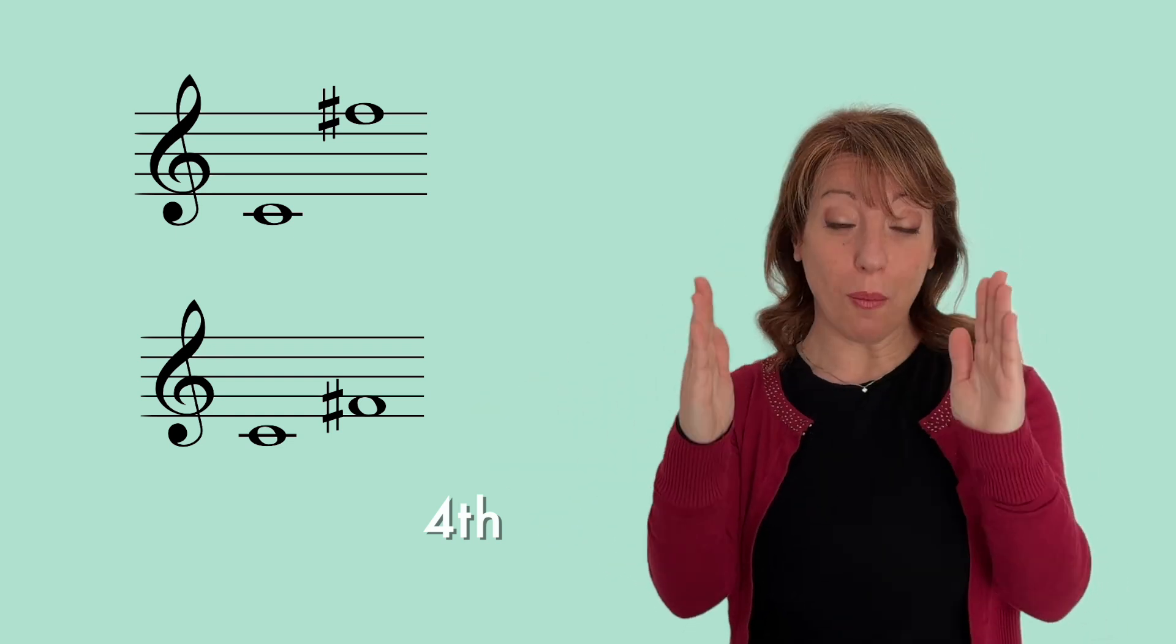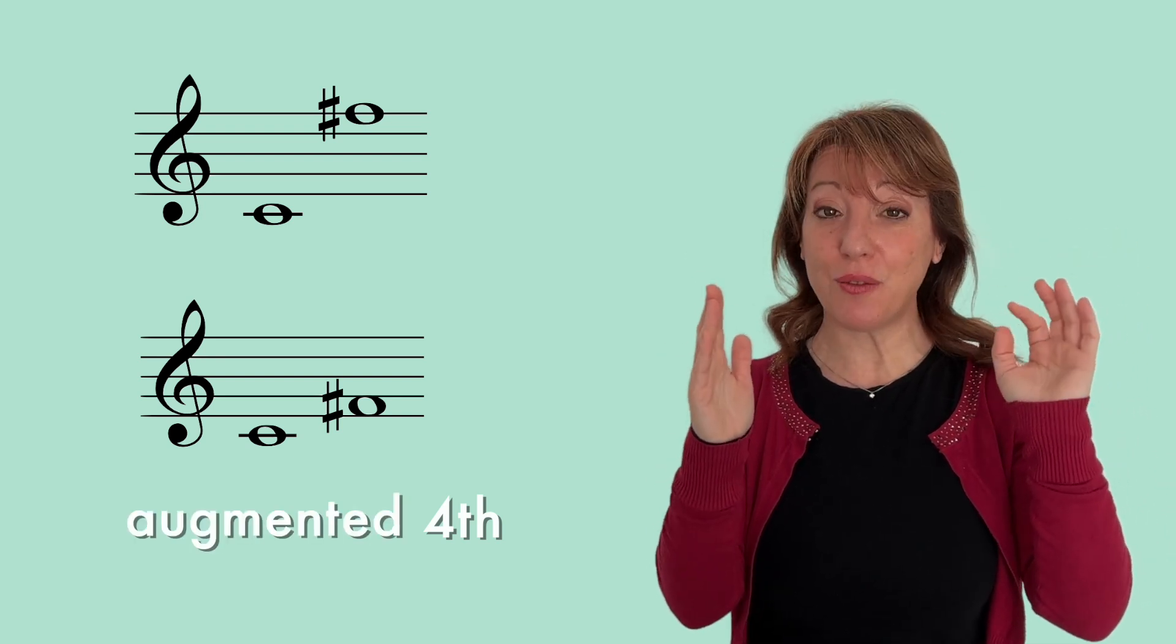It's a fourth. To be perfect, a fourth needs to have two and a half tones. We check and we find that this is actually three tones. So what do we do now? It's not perfect, but it's a little bit bigger. So it's, try to guess. If you said augmented, you were right. So it's an augmented fourth.